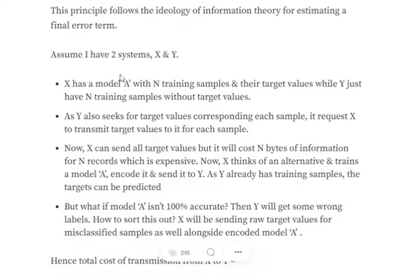Assume that we have two systems, one is X and the other is Y. Model X has a Model A which has the training data set as well as the target values for the training data set, that means the ground truth.